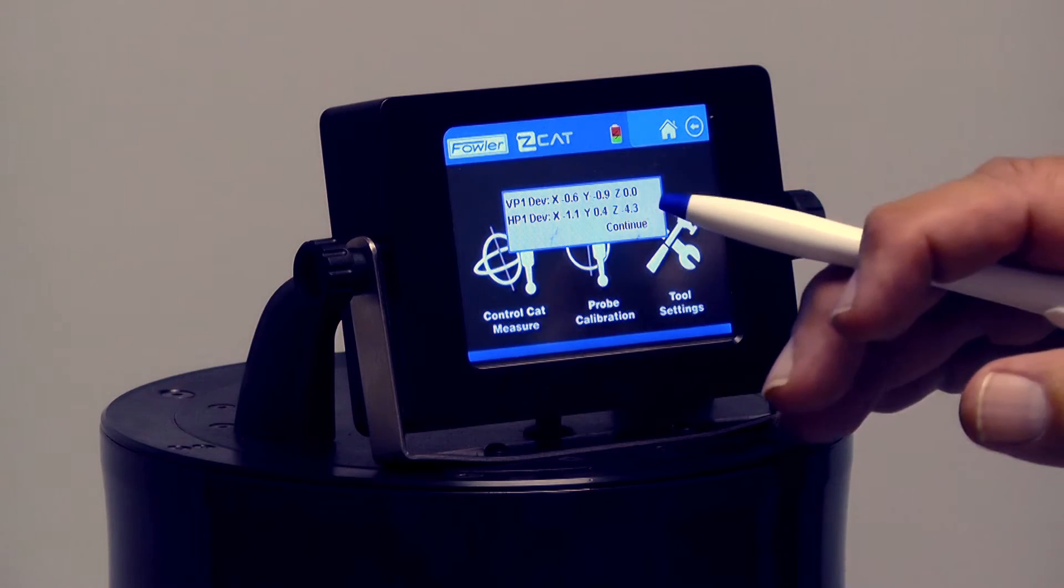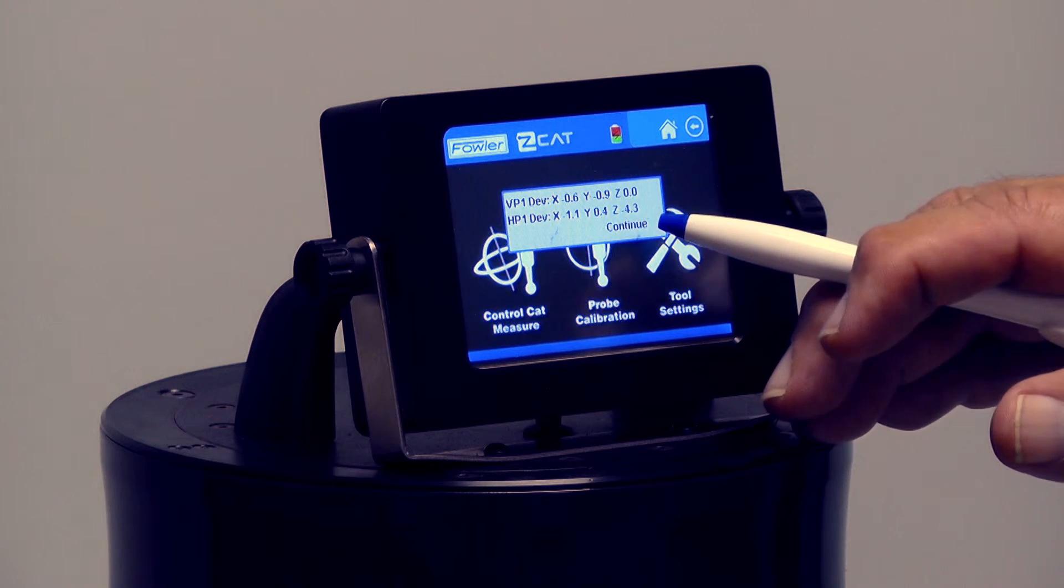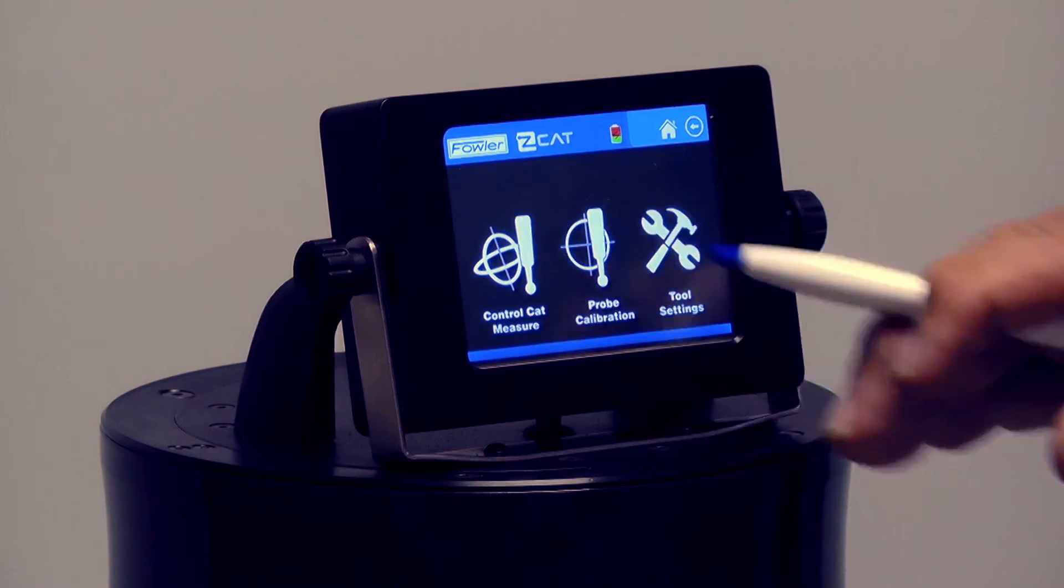At the end of it, it's giving me the deviation on the vertical probe and the horizontal probe from the last time it was calibrated. There's a continue button, and I just hit continue.